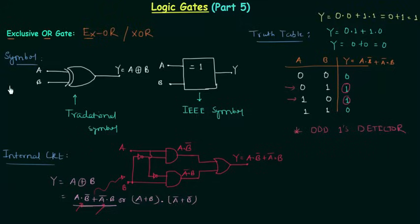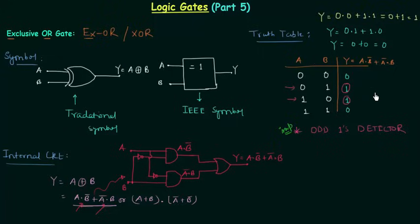This point is very important because it will save you time in your exam. You don't have to evaluate the full expression — just check whether there is an odd number of 1s in the input. When you have 3, 4, or 5 inputs, it is better to use this odd-ones detector property.